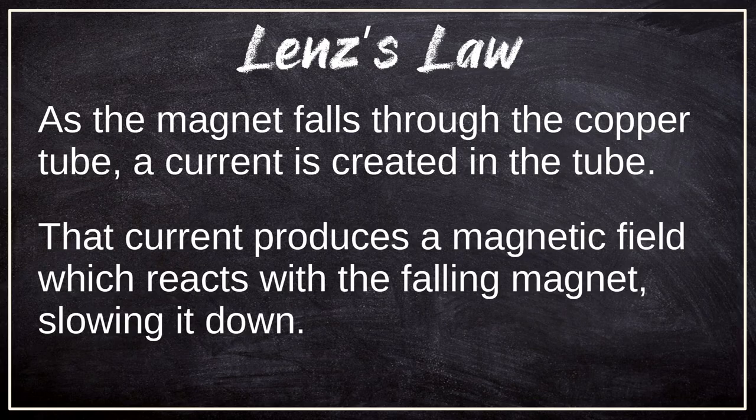The practical effect of Lenz's Law in this particular demonstration is this: as the magnet falls through the copper tube, a current is created in the tube. That current produces a magnetic field which reacts with the falling magnet, thus slowing it down.